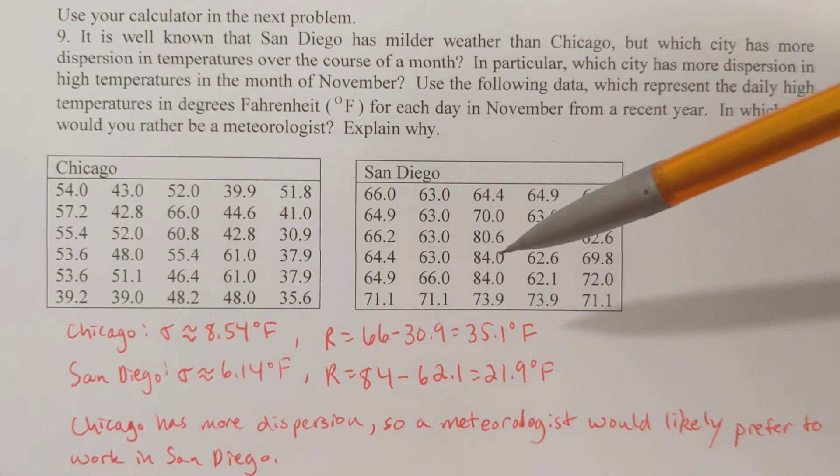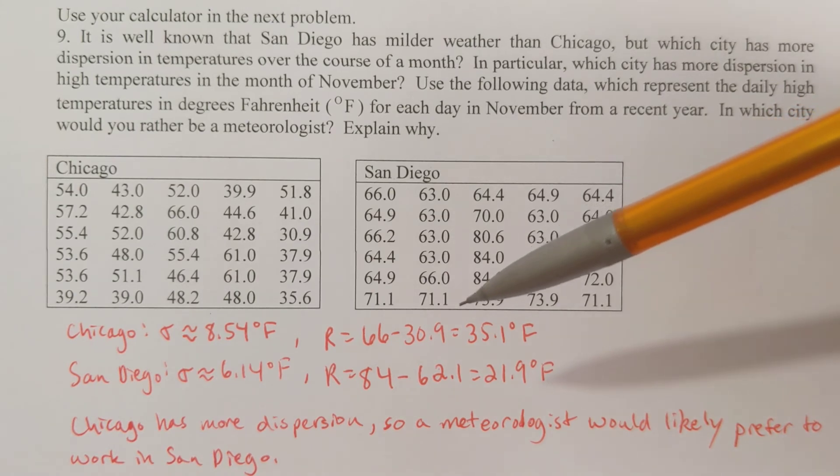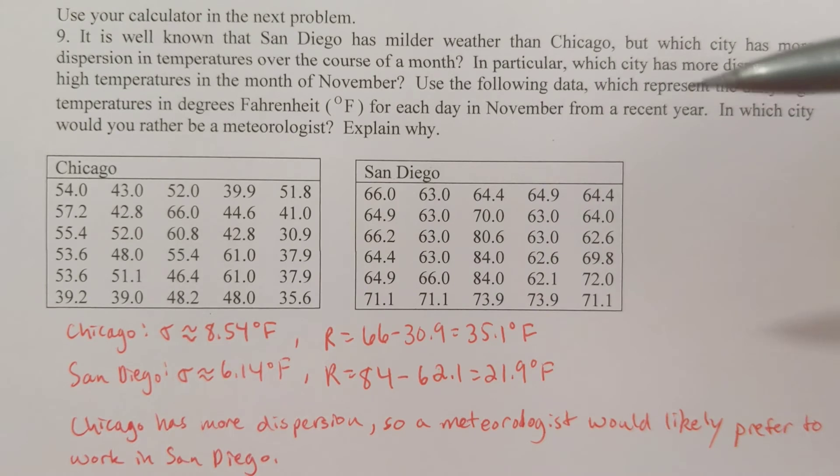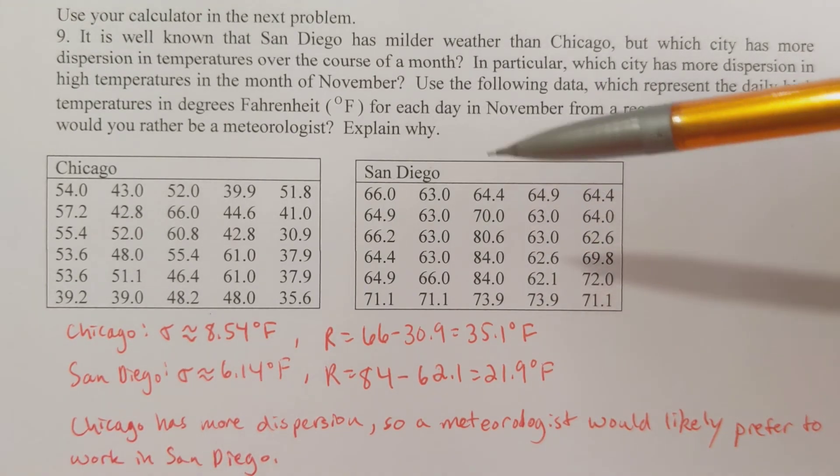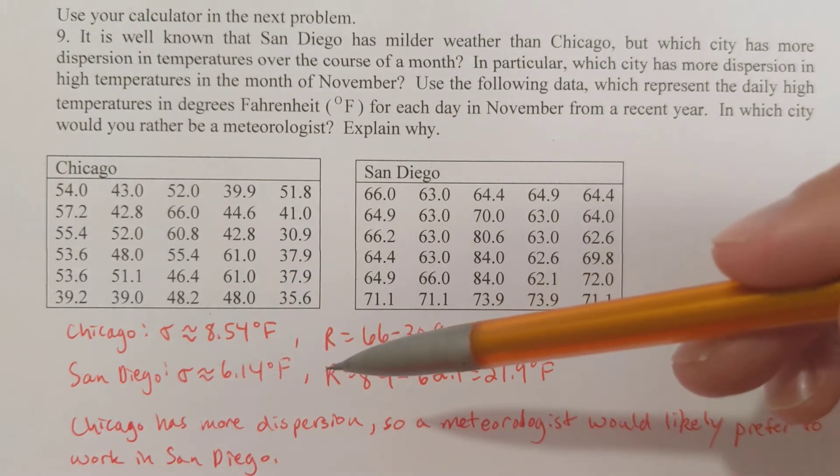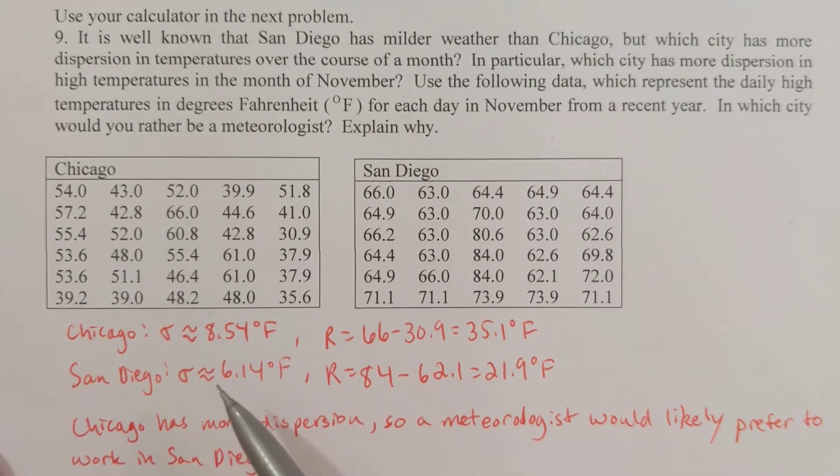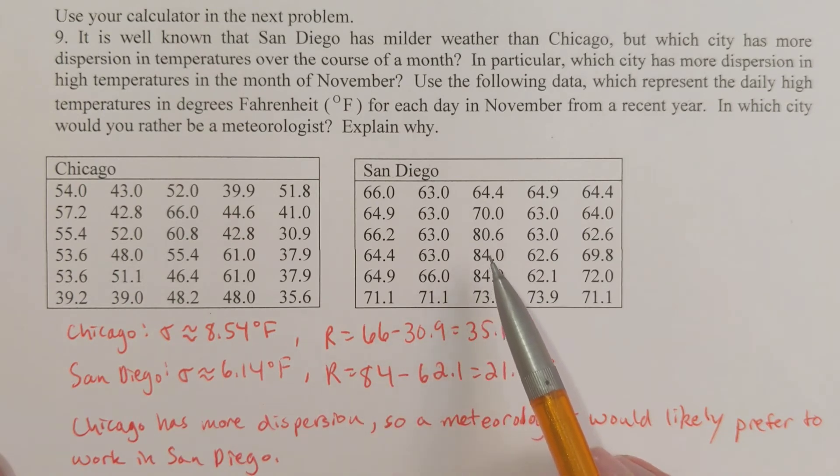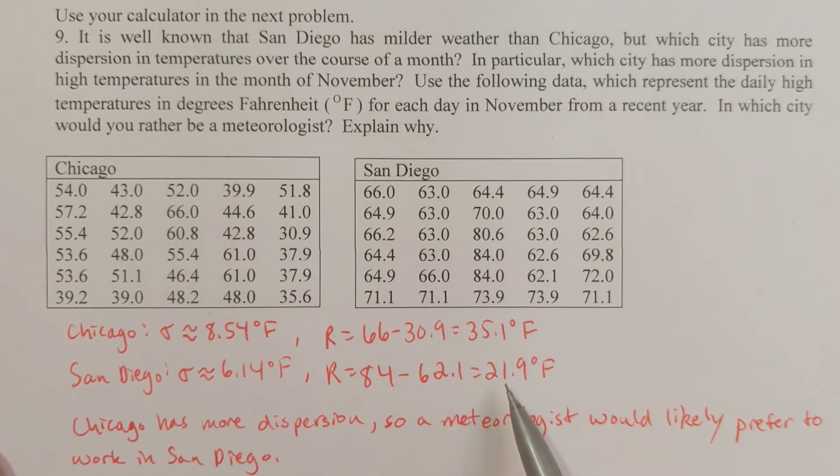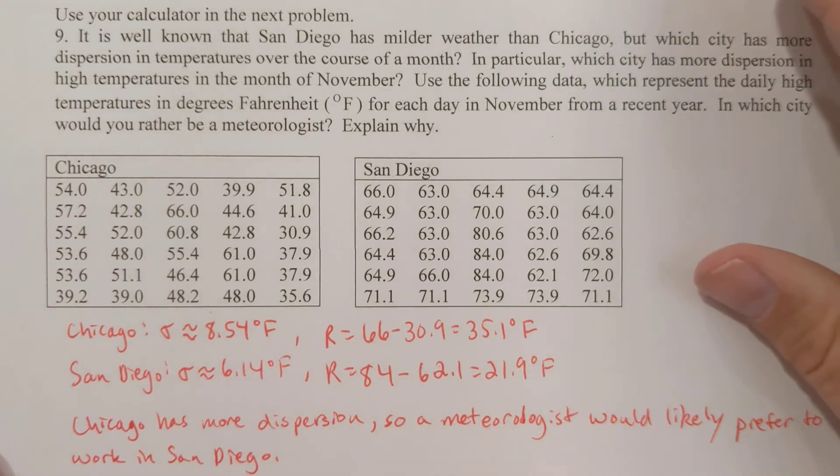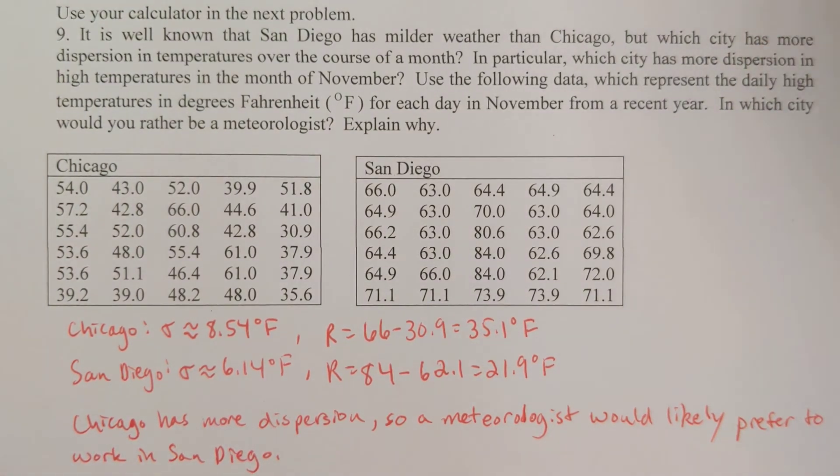So then I do the same for San Diego. I type in all the numbers and then I hit stat and then I hit enter. Again, assuming that this is a population, so the entire data for November, the standard deviation for San Diego should be roughly 6.14 degrees Fahrenheit, and the range, 84 minus 62.1, gives me a range of 21.9 degrees Fahrenheit.